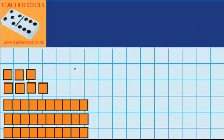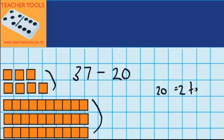Now down here you can see I've got 37. And that 37 is made up of 3 tens and these 7 ones. Now I want to take away 20. And we know that 20 is the same as 2 tens.